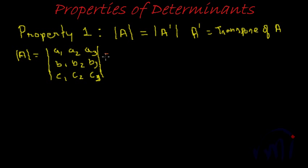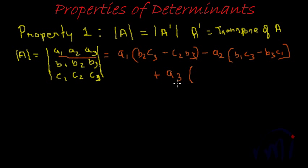Then determinant of A would be given by A1 multiplied by B2, C3 minus C2, B3 minus A2, B1, C3 minus B3, C1 plus A3 multiplied by B1, C2 minus B2, C1. This is your standard expansion of a matrix of this form.